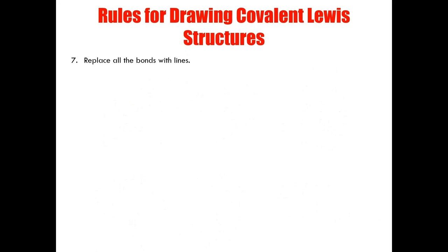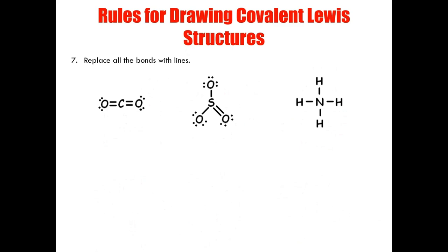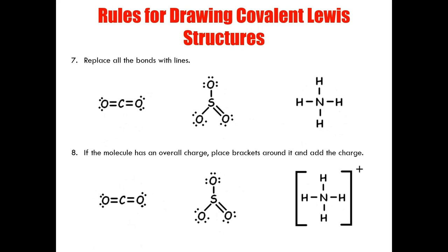Rules seven and eight add the finishing touches to covalent Lewis structures. Rule seven is to replace all the bonds with lines — carbon dioxide has two double lines connecting carbon and the oxygens; sulfur trioxide has one double bond and two single bonds; and the ammonium ion has four single bonds. Rule eight: if the molecule has an overall charge, place brackets around the entirety of the molecule and add the charge. Carbon dioxide and sulfur trioxide remain unchanged, but the ammonium ion is placed in brackets with an overall positive charge.